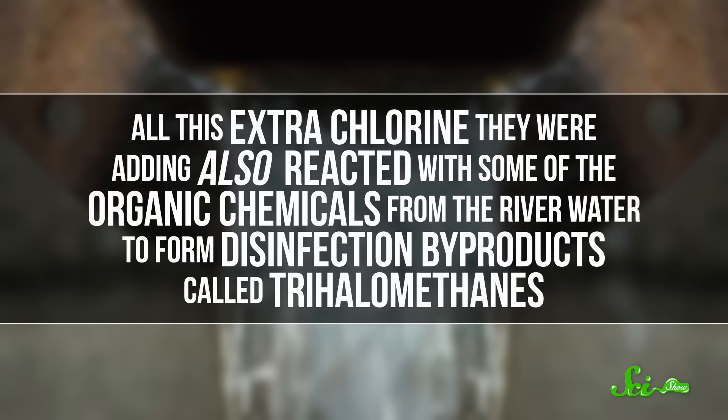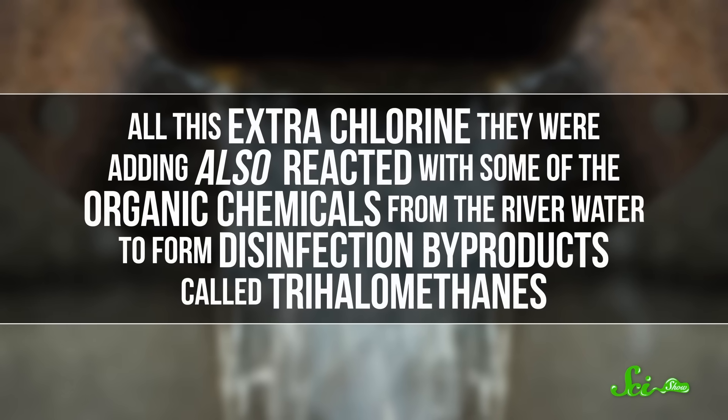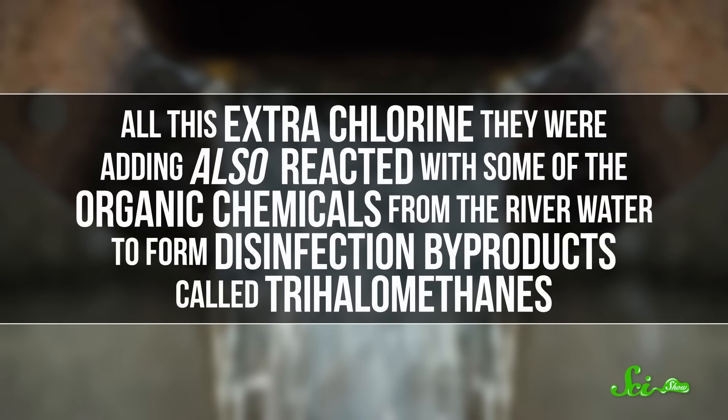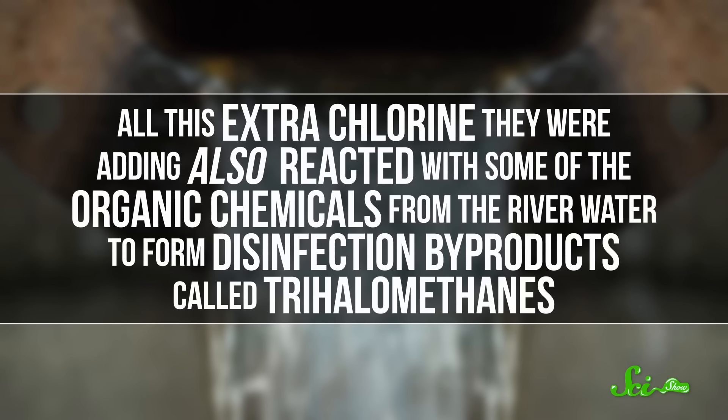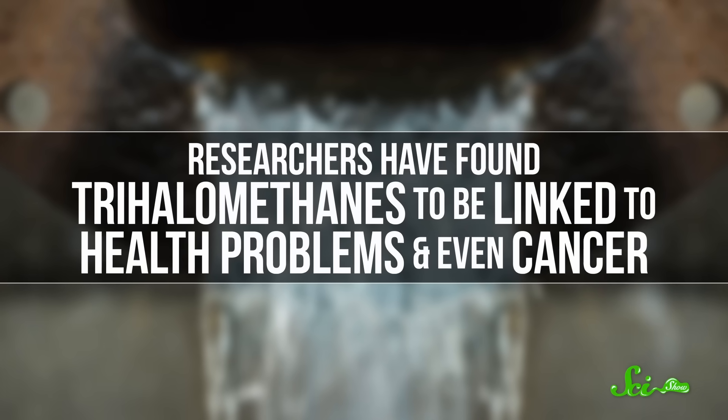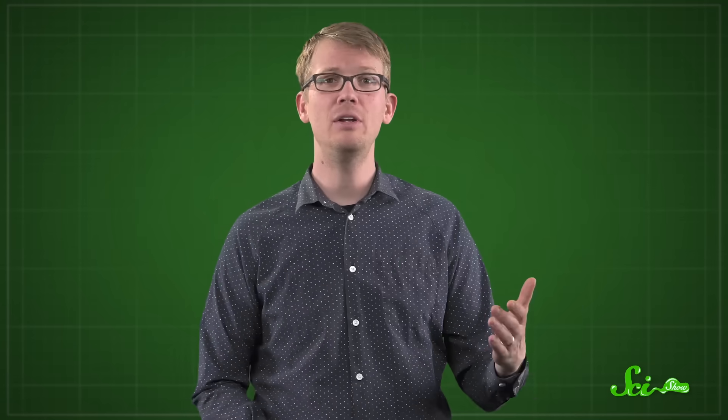But because the pipes were already corroding, it wasn't working. Not only that, but all this extra chlorine they were adding also reacted with some of the organic chemicals from the river water to form disinfection byproducts called trihalomethanes. And researchers have found trihalomethanes to be linked to health problems and even cancer. So not only was the chlorine turning into a bunch of non-disinfectant chemicals, one of those was potentially a carcinogen.